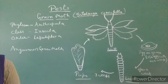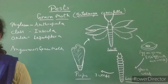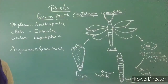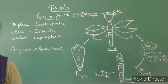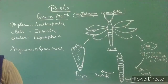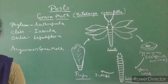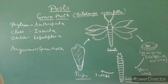For prevention and control, first of all the grains should be dried thoroughly and sterilized. After that, the grains should be stored in proper storage structures. Infested grains at egg, larval, or pupal stage should be removed from the stored grain before storage.